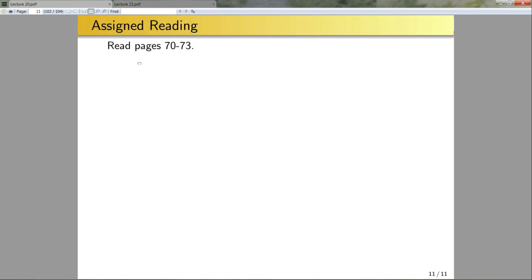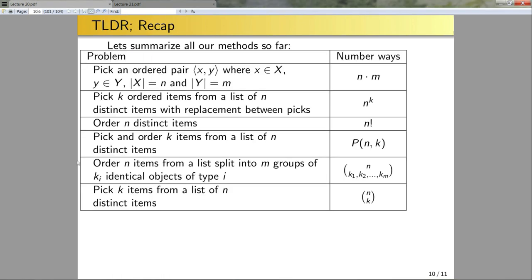For your assigned reading, please read pages 70 through 73. Examples 15 and 16 cover permutations, and examples 17 and 18 cover combinations — read and go through all of those. Next week we're also covering more combinatorics, so your next assignment will include problems using these methods along with a couple of other techniques.